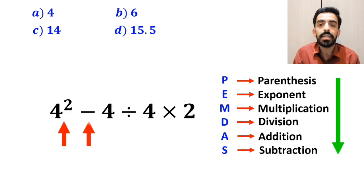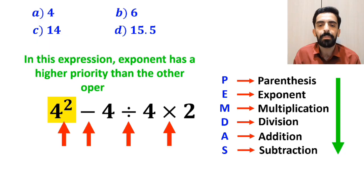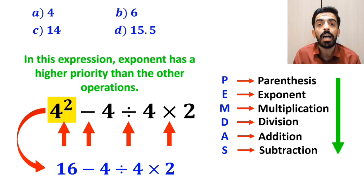First we have an exponent, then a subtraction, followed by a division, and finally a multiplication. We should start with the exponent, because in this expression, exponent has a higher priority than the other operations. So, this expression simplifies to 16 minus 4 divided by 4 times 2.